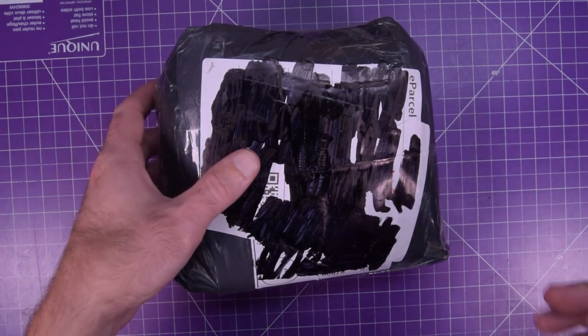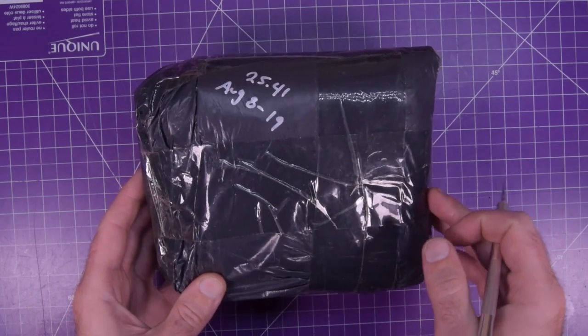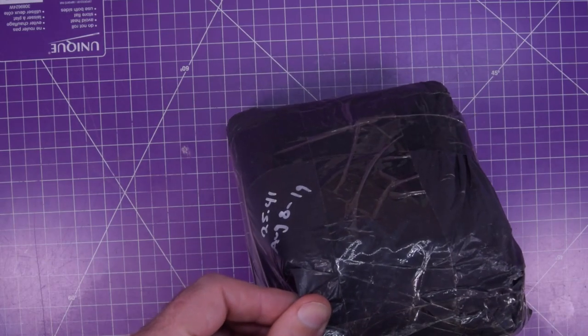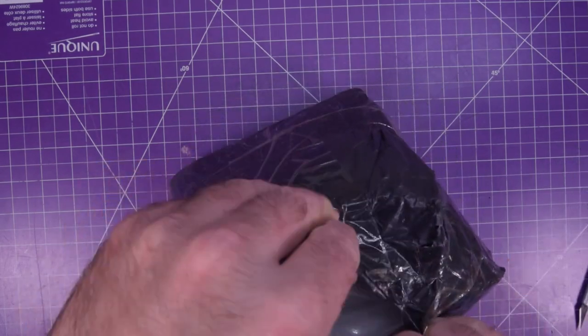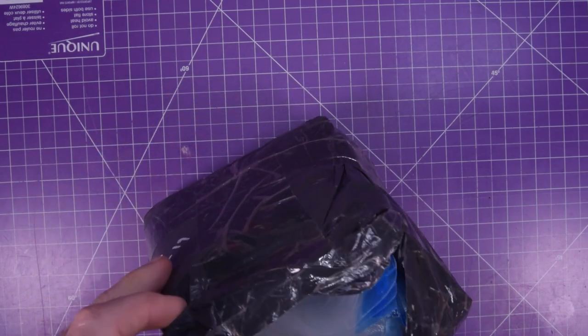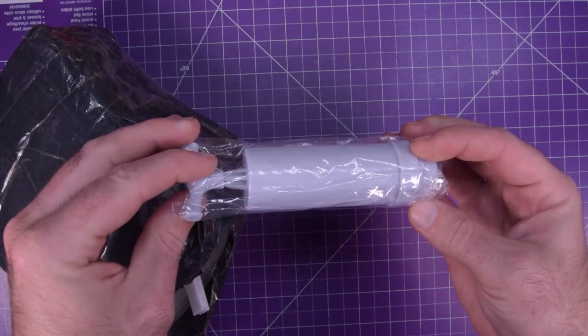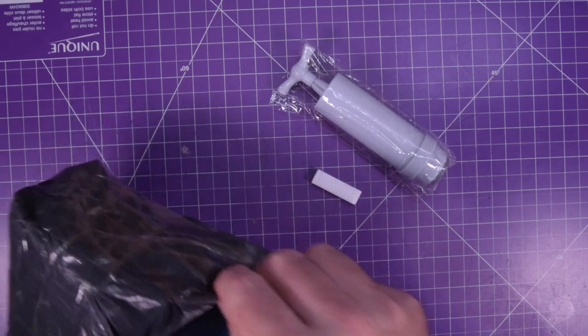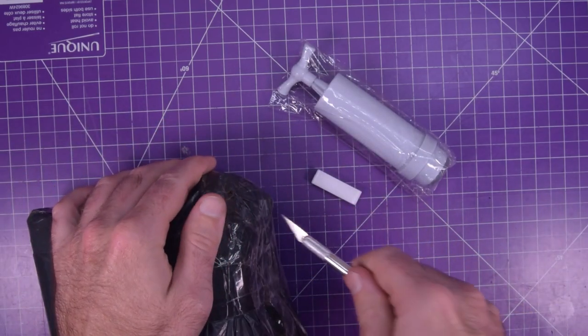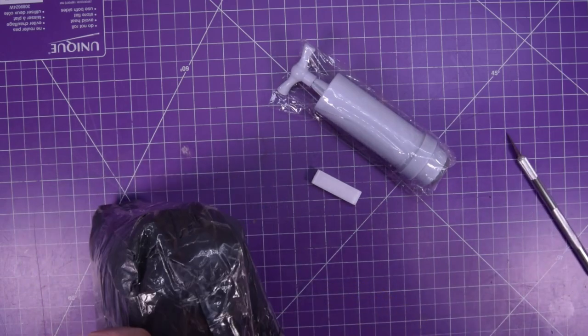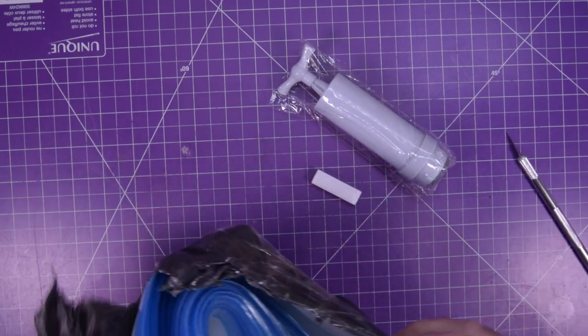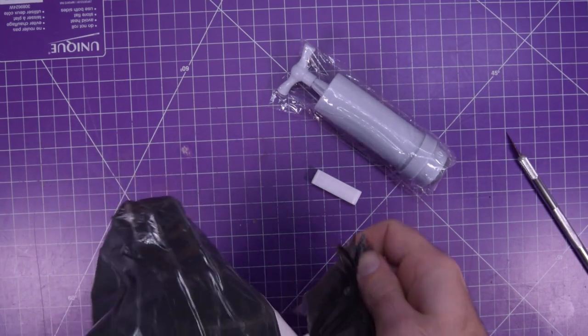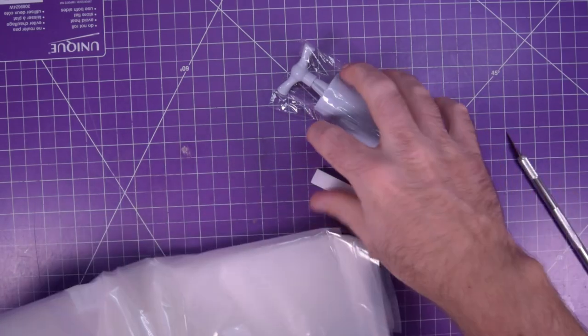And the last package is this one here. $25.41. August 8th ordered. August 19th arrived. Hopefully I didn't make a hole through any of these. Nope. I don't really know what this is for. Do you know what these things are?